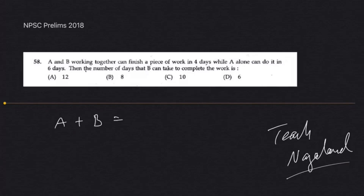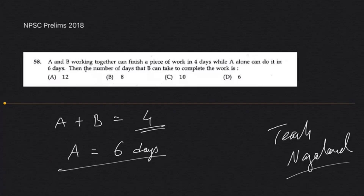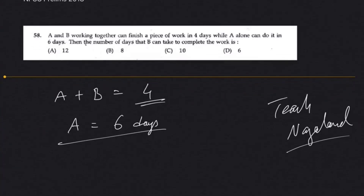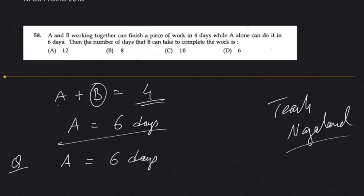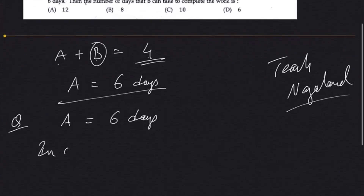A alone can do it in 6 days. The question asks: in how many days can B alone finish the same work? The concept is very simple — in one day, A and B together can finish one-sixth... let's work through this carefully.